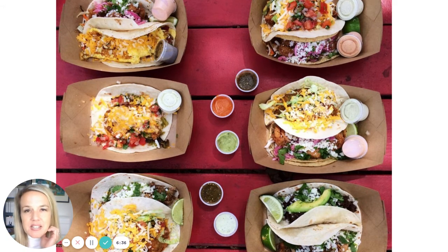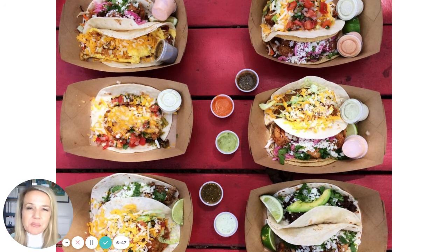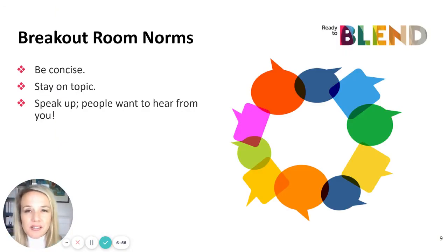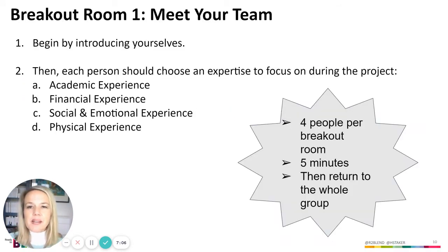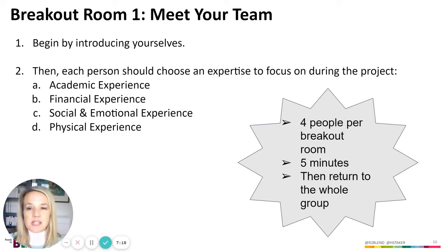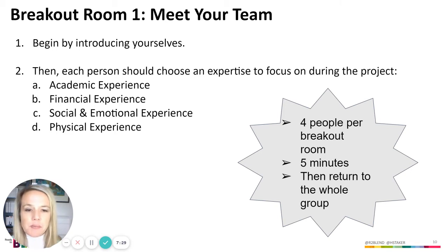We began with a simple get-to-know-you exercise. I live in Austin, Texas, and one of the favorite foods here is tacos — a flatbread tortilla with lots of different toppings. We broke into breakout rooms for those introductions, and the norms we agreed to were to be concise, stay on topic, and speak up because people want to hear from you. In the first breakout room, the different professors met their team. They were grouped into teams of four or five, introduced themselves, described their favorite food, and then each chose a specialty — whether they would focus on the academic experience for students, the financial experience, the social and emotional experience, or the physical experience. There were four people per breakout room, they had five minutes, and then they returned to the whole group.